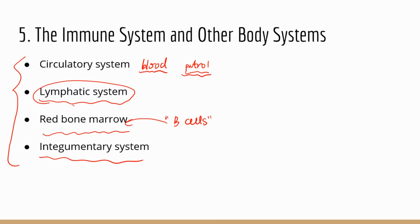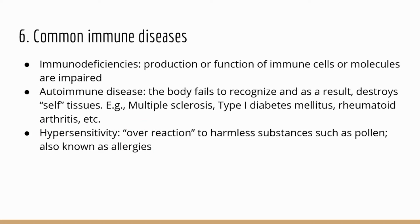The integumentary system — mostly the skin — is part of the physical barrier, serving as the first line of defense in the immune system. The last topic is common immune diseases. There are three conditions related to our immune response. The first is immunodeficiencies — based on the name, you know this is an abnormal condition where the immune system is not as strong as it should be, due to impairment of production or function of immune cells or molecules.